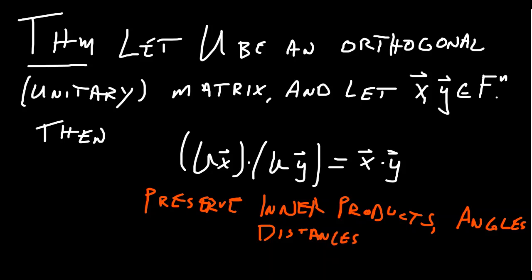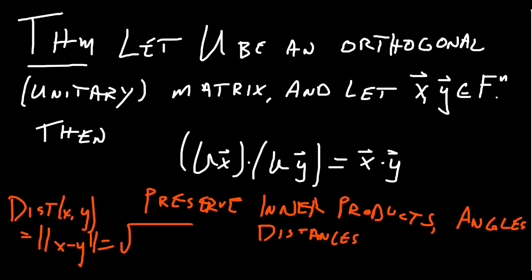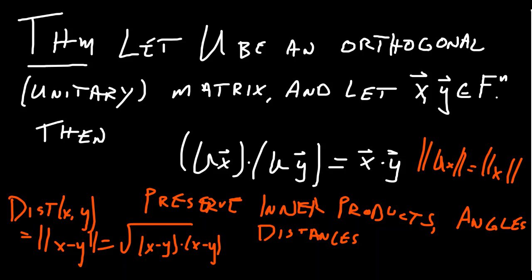They also preserve distances, because the distance between vectors x and y equals the length of x minus y, which is the square root of the dot product of (x-y) with itself. Anything defined using the dot product is preserved by orthogonal and unitary matrices — distances, angles, and norms. In particular, the norm of Ux equals the norm of x: multiplying by an orthogonal or unitary matrix doesn't change the length of a vector.